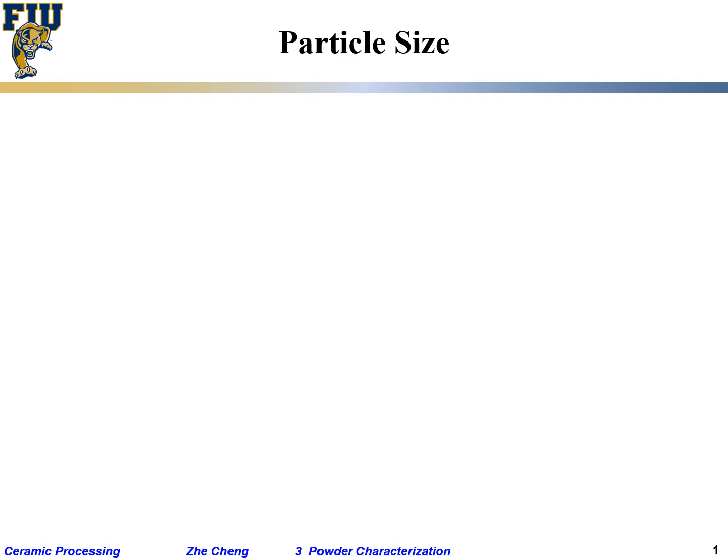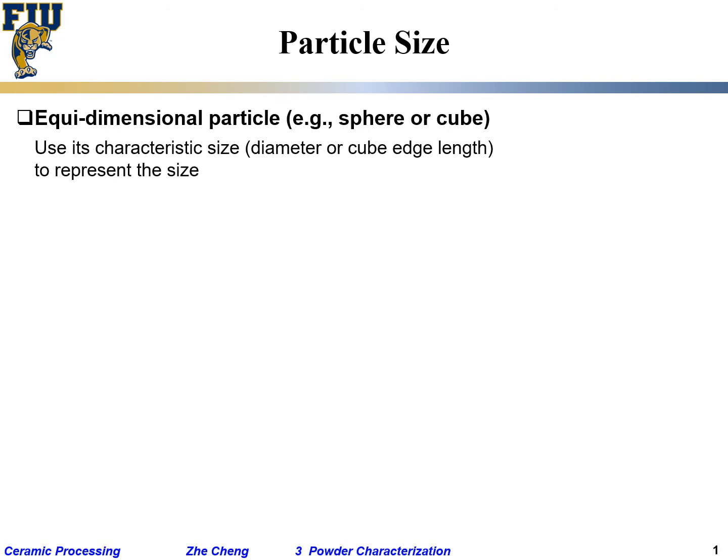Particle size: When we talk about particles, we quite often have to talk about particle size. For so-called equidimensional particles—which means when you look from different angles and directions they are roughly the same dimension—like spheres or cubes, you just use the characteristic size: diameter or edge length.